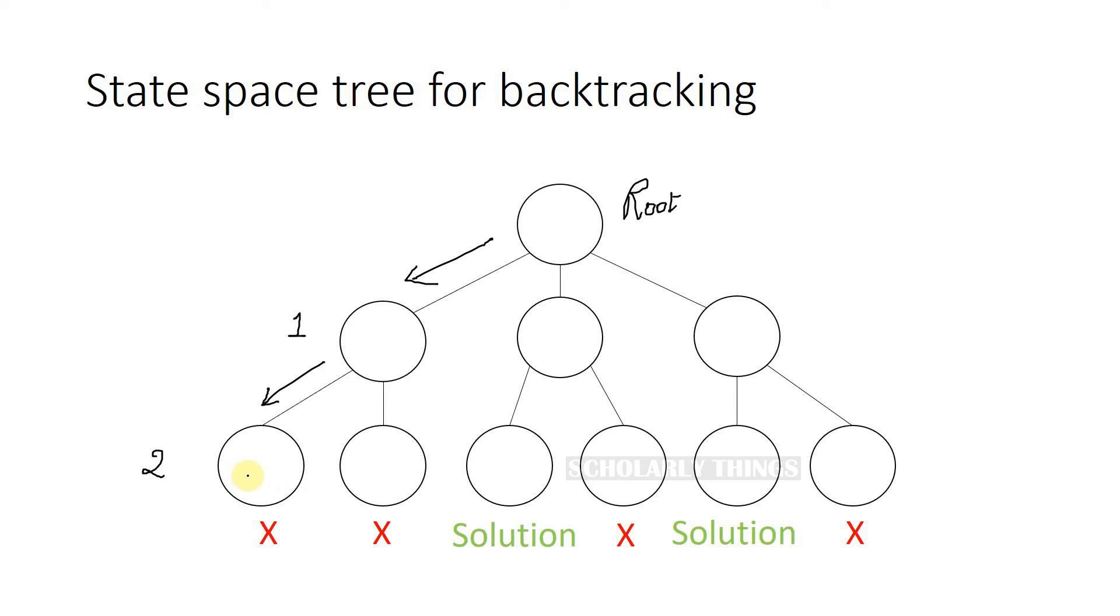So you go back to its parent node, and then the other possible option is to choose this particular node. Assume that here also the constraint is violated, then you go back to its parent node. And at this stage, there are no more children of this particular node to check, so you go back one more level.